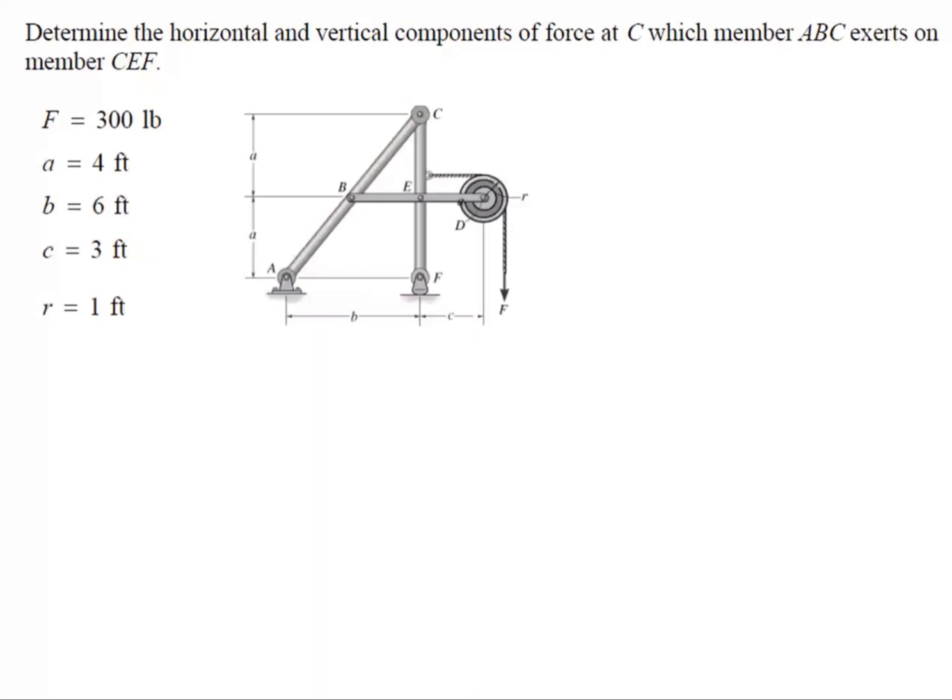I've got two members here. I need forces at C. We're going to start the analysis. You need to find a point where you've got a maximum of two unknowns and one known. Is there any point? Point B has got three unknowns. I cannot draw the free body diagram of the whole system because there are so many unknowns.